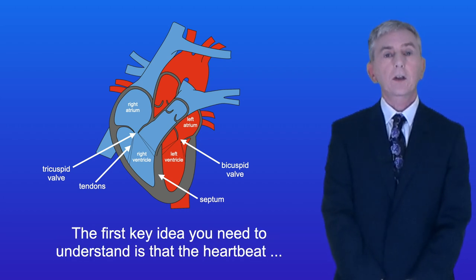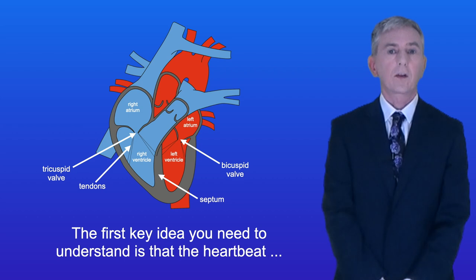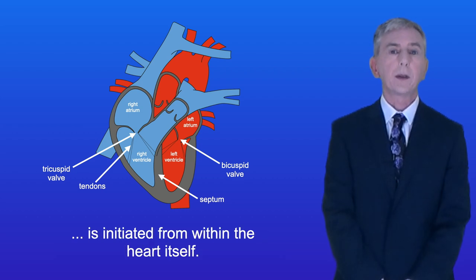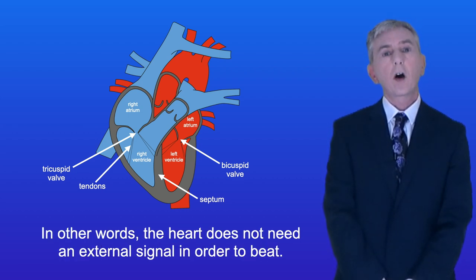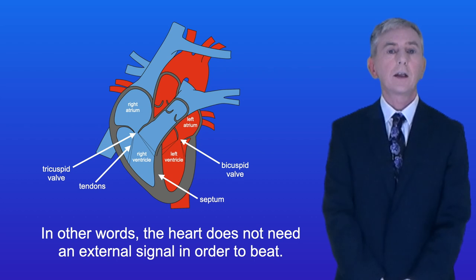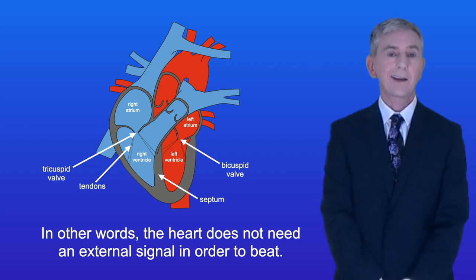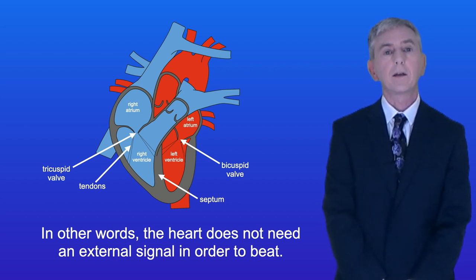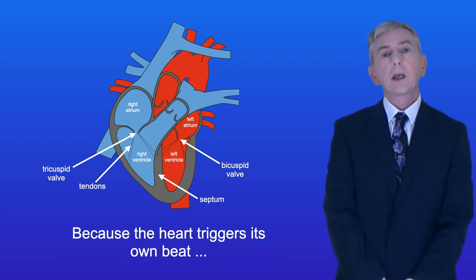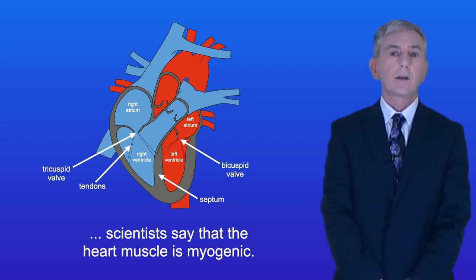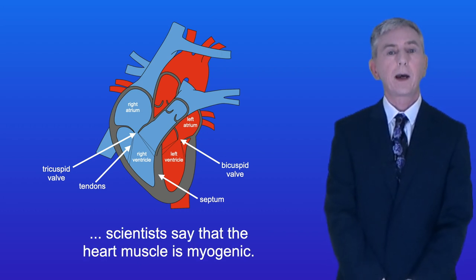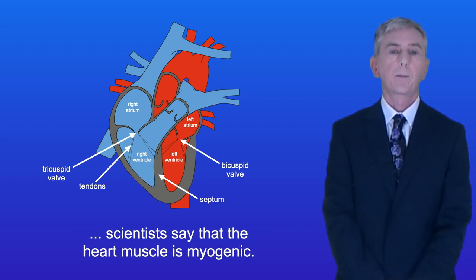The first key idea you need to understand is that the heartbeat is initiated from within the heart itself. In other words the heart does not need an external signal in order to beat. Because the heart triggers its own beat, scientists say that the heart muscle is myogenic.